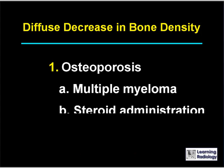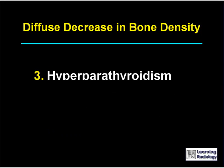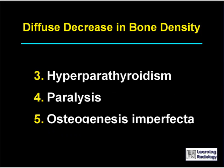The five major causes of diffuse decrease in bone density include osteoporosis — from multiple myeloma, steroid administration, aging — osteomalacia, hyperparathyroidism, paralysis, and osteogenesis imperfecta.